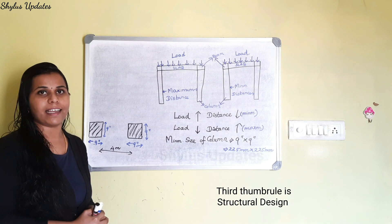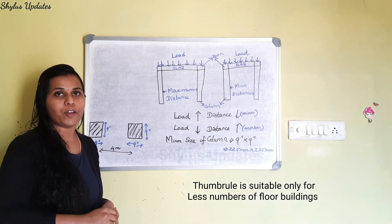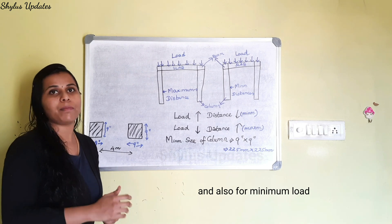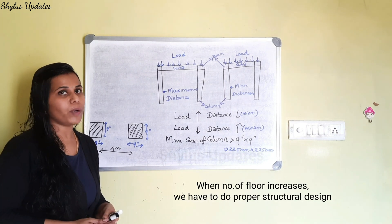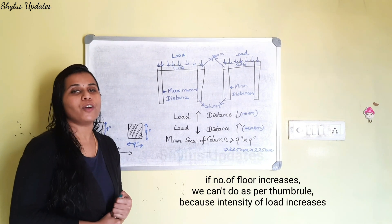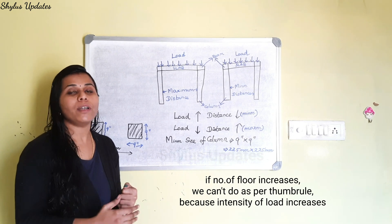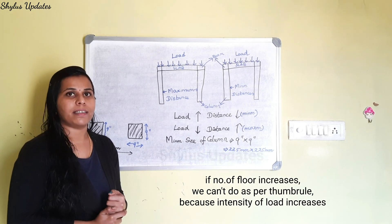Third thumb rule is structural design. The thumb rule is suitable only for less number of floor buildings and also for minimum load. When the number of floor increases, we have to do proper structural design. If the number of floor increases, we can't do as per thumb rule because the intensity of load increases in this case.